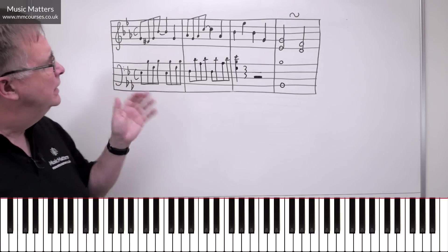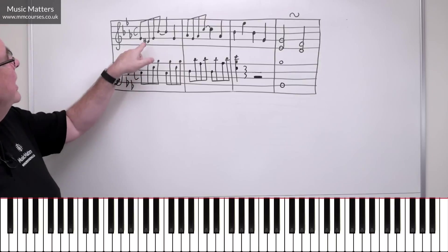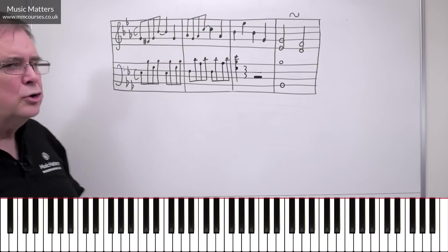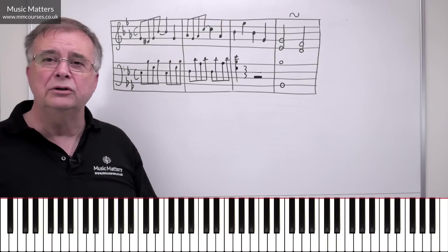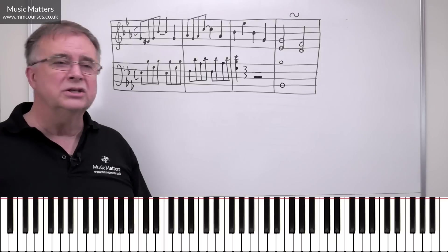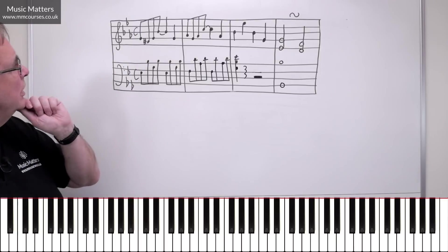Sometimes we have little decorations. So for example, this F-sharp is a chromatic lower auxiliary note. Well, that sort of thing might well belong to classical style. So we can use that to our advantage.